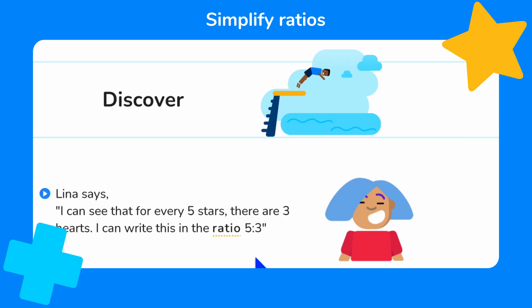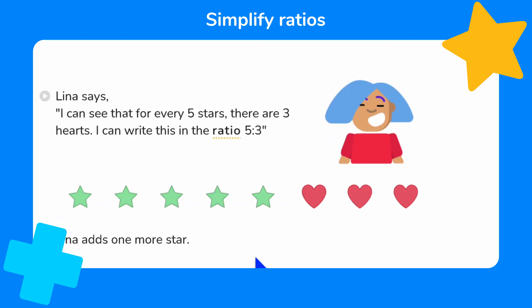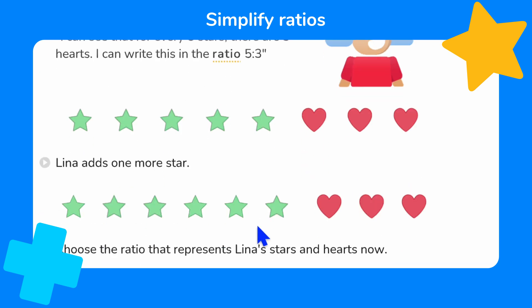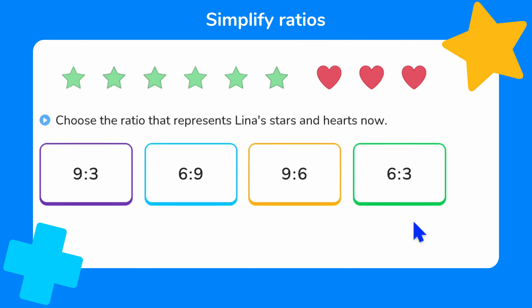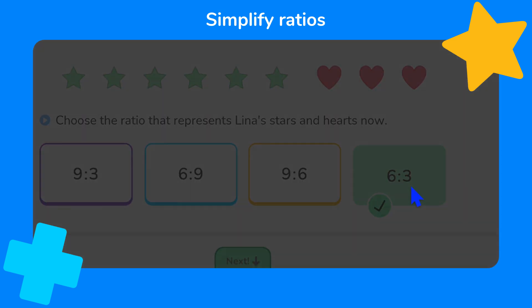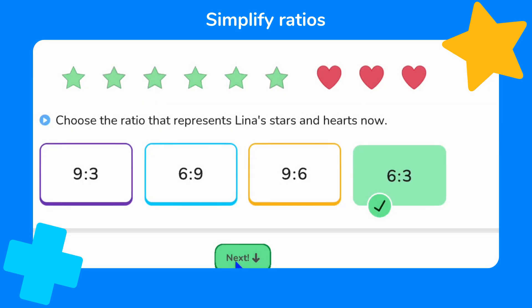Lena is learning about ratio. She says: I can see that for every five stars there are three hearts. I can write this in the ratio five to three. Lena then adds one more star. I can see now that there are six stars and three hearts, so we know that for every six stars there are three hearts. Can you see which ratio shows this relationship? It must be six to three. Great, that's our second doodle star.